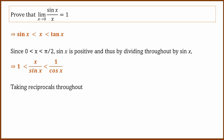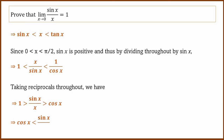Taking reciprocals throughout reverses the inequality. So: 1 by 1 is greater than sin x by x, which is greater than cos x. That is: cos x is less than sin x by x, which is less than 1.